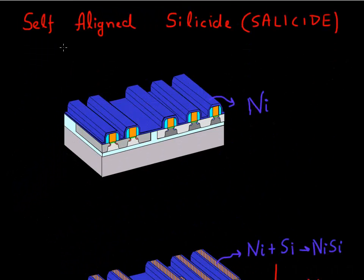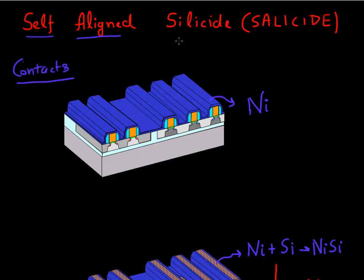The anneal step is where we encounter the highest temperature or highest thermal budgets in the process flow, using temperatures near or above 1000 degrees centigrade to activate the implants. Once we have activated the implants, we are done forming our junctions. The next step is to form contacts to the source and drain implants using a process called self-aligned silicide, or salicide.